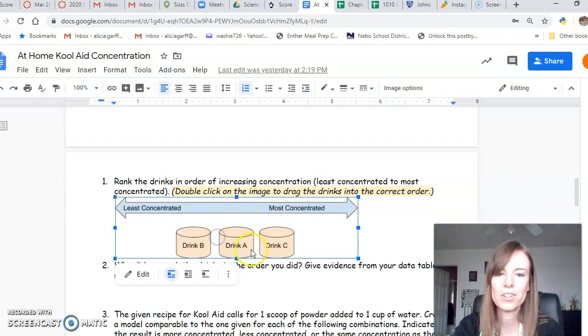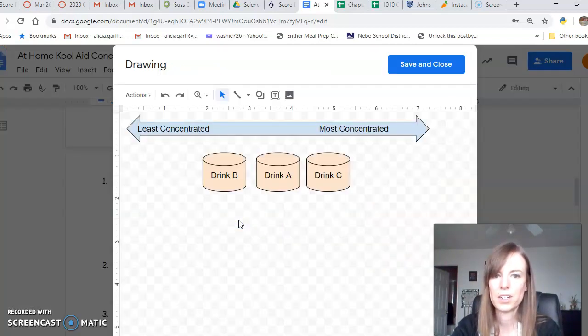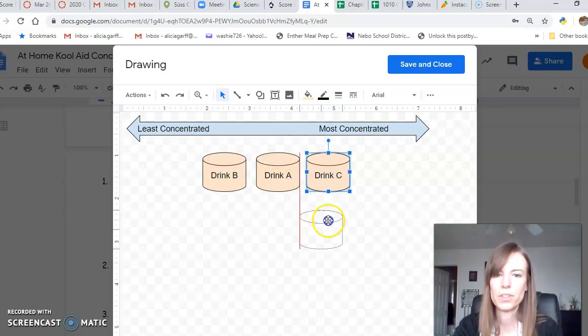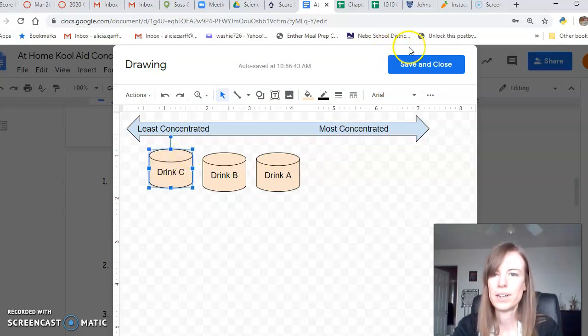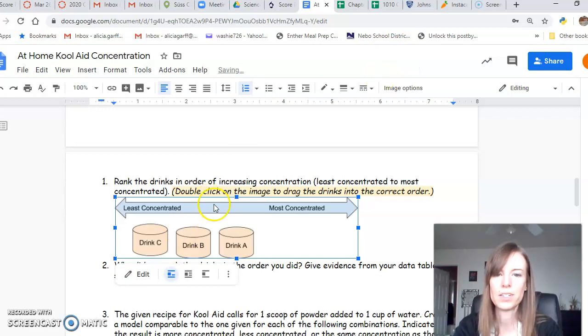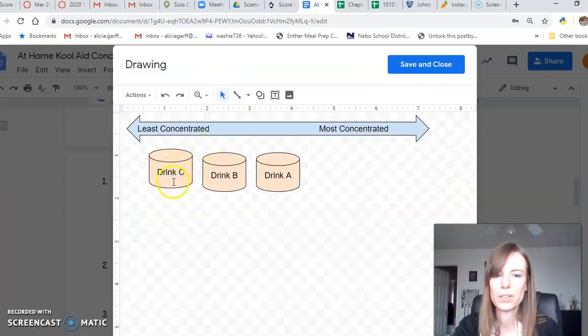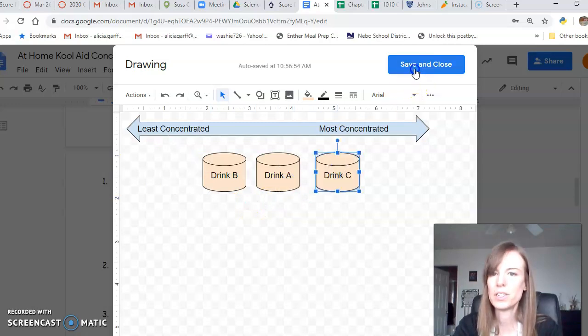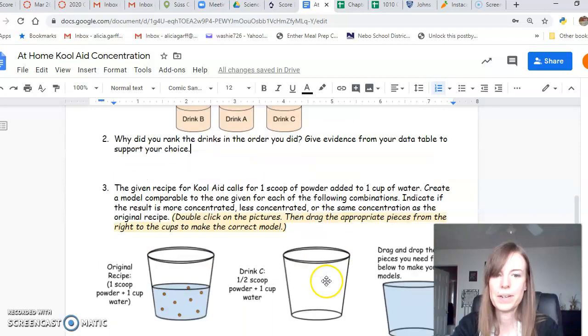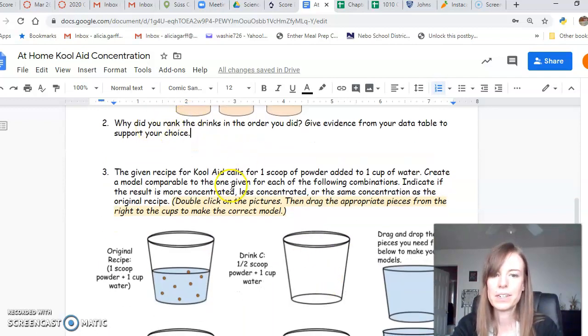Now this is where it gets a little confusing though. To drag these, you're going to notice if you try and just click and drag, nothing's going to happen. What you have to do is double click on this picture and it's going to come up with a drawing, and then you can move them around. So if you think this one's the most dilute you could move it over there, and then if you hit save and close it'll save your changes. But I'm going to put it back to the way it was.